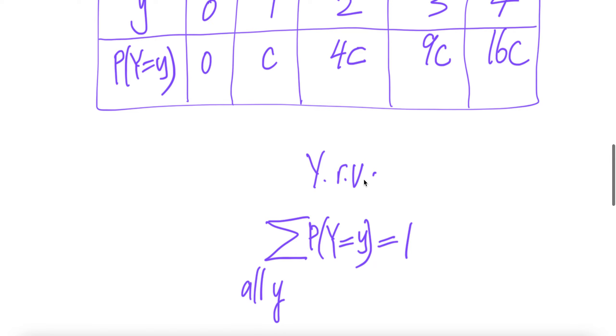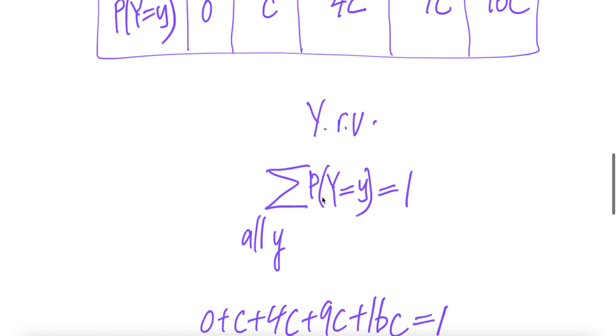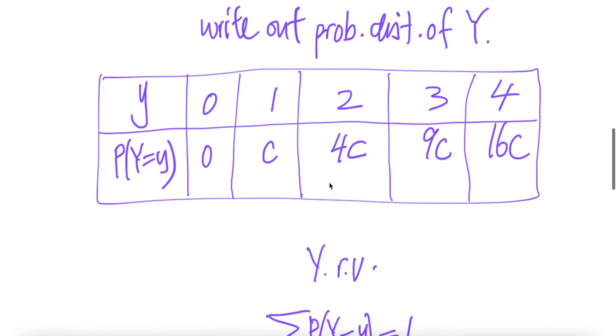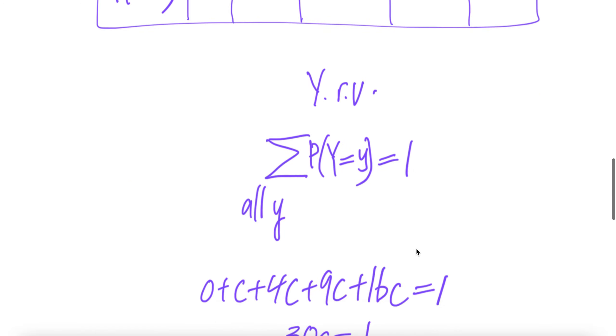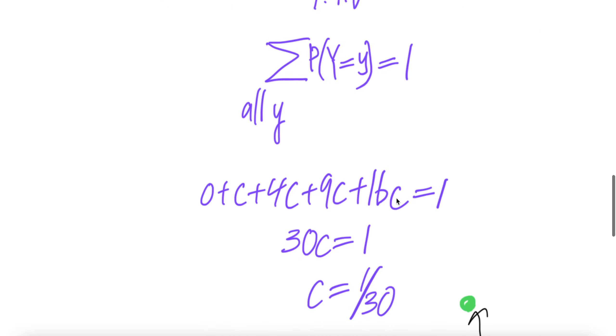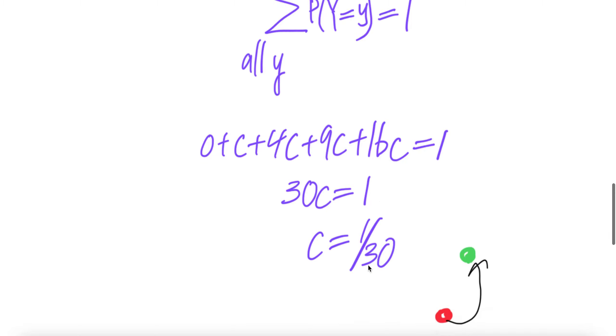Y is a random variable, so the sum of all probabilities must equal 1 because one of these outcomes has to happen. Therefore, 0 + c + 4c + 9c + 16c = 1, which gives us 30c = 1, so c equals 1 over 30.